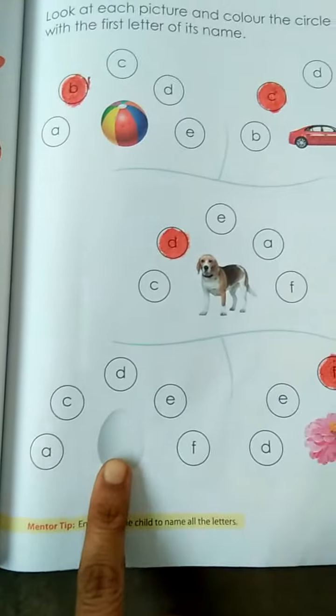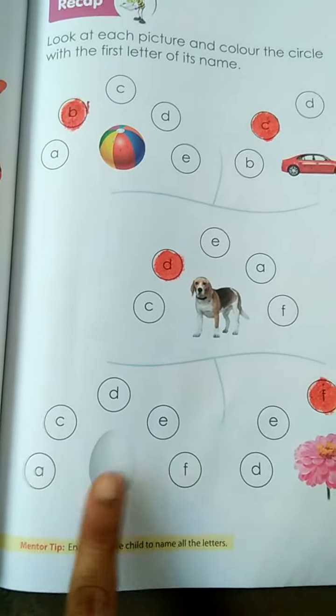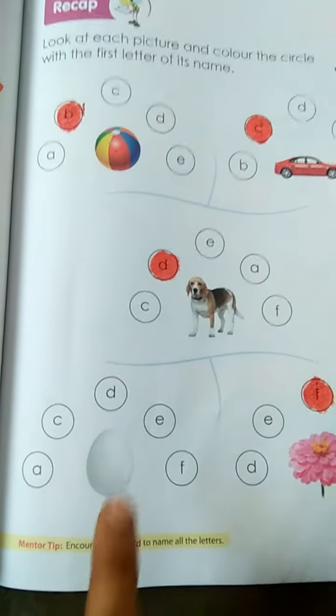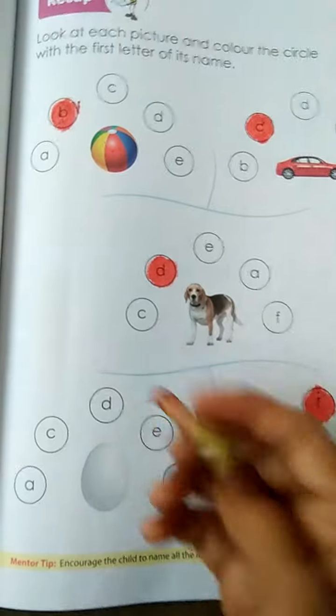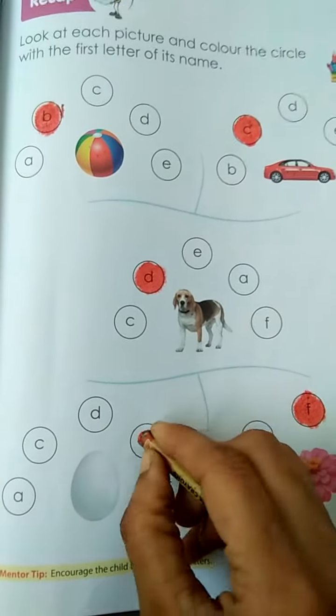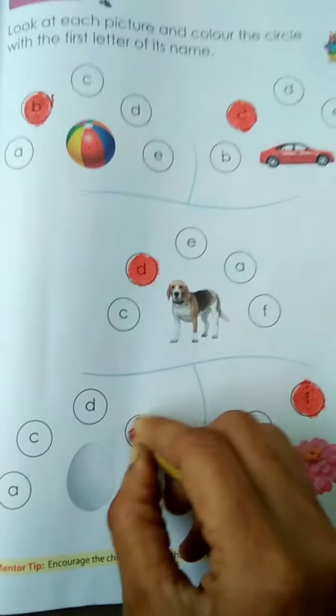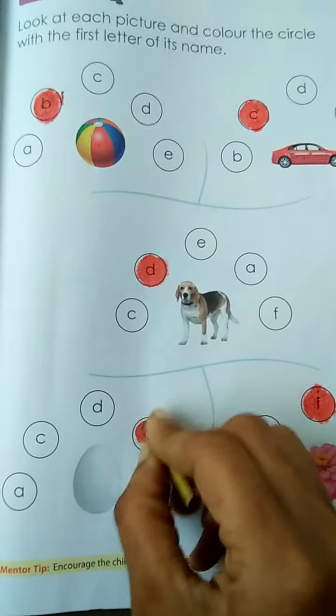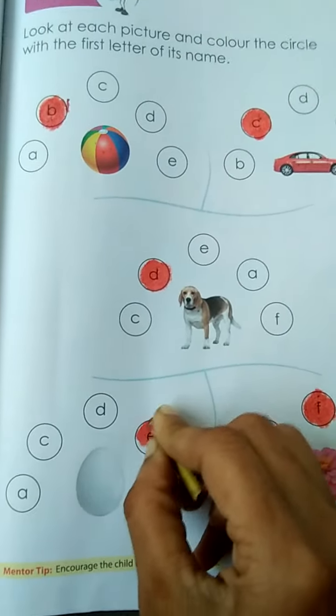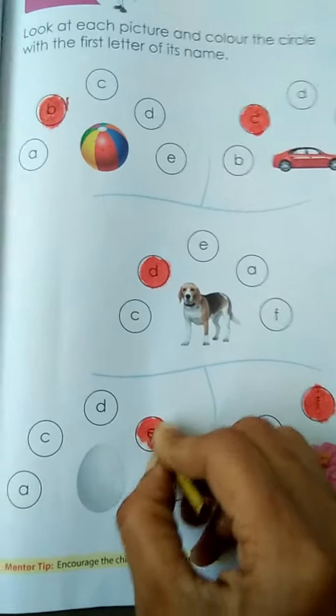Which picture is this? Yes, this is an egg. Then you have to color in the circle of E like this.